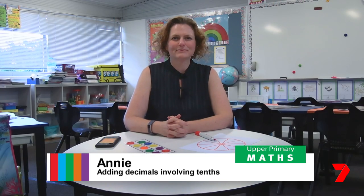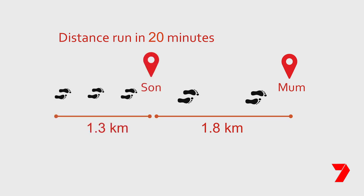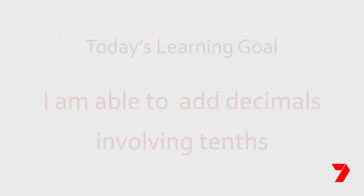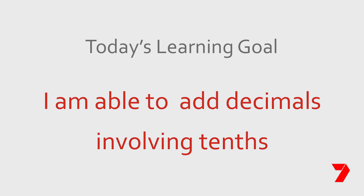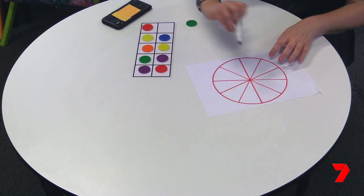Hi there, I'm Annie. This morning I went for a 20-minute run with my son. I ran 1.8 kilometres and my son ran 1.3 kilometres. If we ran a relay, what distance would we have run? In order to calculate this distance, we're going to look at how to add in tenths. A tenth is one part of a whole that's divided into ten equal parts. You can have a tenth as a group of items, a tenth as a whole object, or tenths as a number.